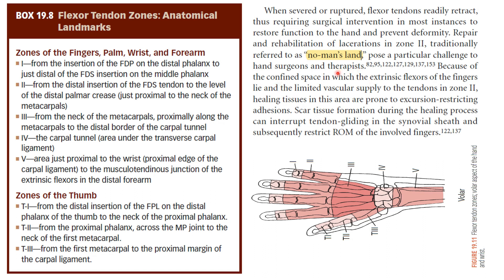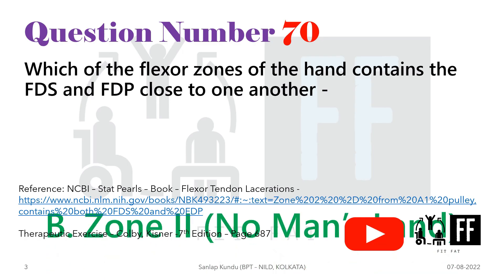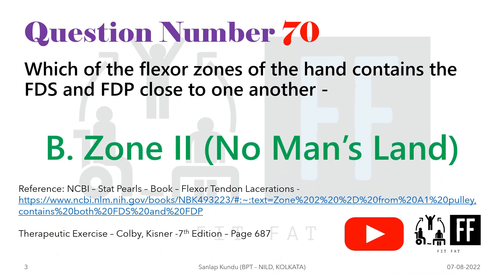This is why zone 2 is also called 'no man's land.' So the answer is: in zone 2, or no man's land, both the FDS and FDP are very close to one another, contained inside the digital fibrous sheath.